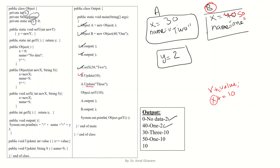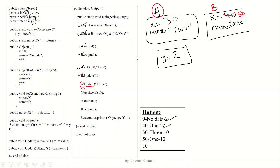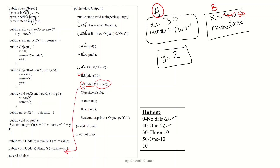Then we call a.update("3"). We are now talking about object a, and we send the String "3" to the update method. Since "3" is a String, we call the second overloaded update method. It takes s and saves it in name. So for object a, name now has the value "3".